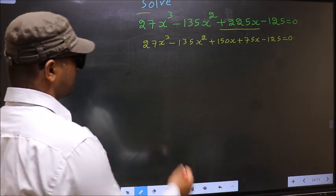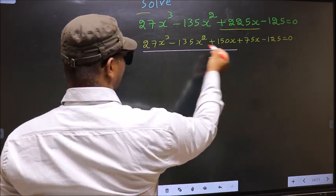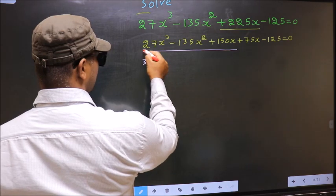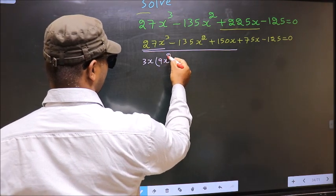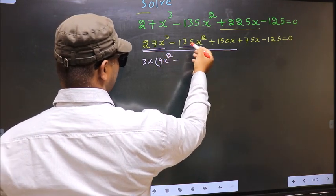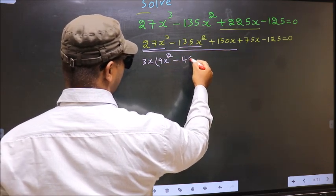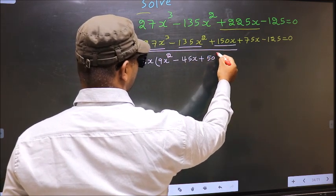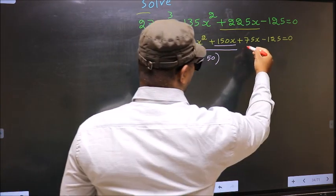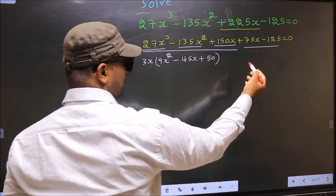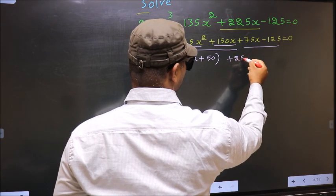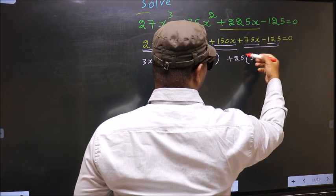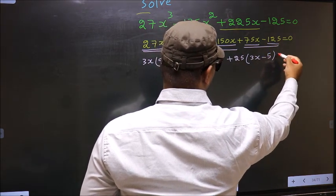Now, from these three terms, what can be taken out common is 3x. So here you get 9x² minus — taking 3x out — you get 45x plus — taking 3x out — you get 50. In the same way, from these two terms, what can be taken out common is plus 25. So here you get 3x minus — taking 25 out — you get 5, equal to 0.